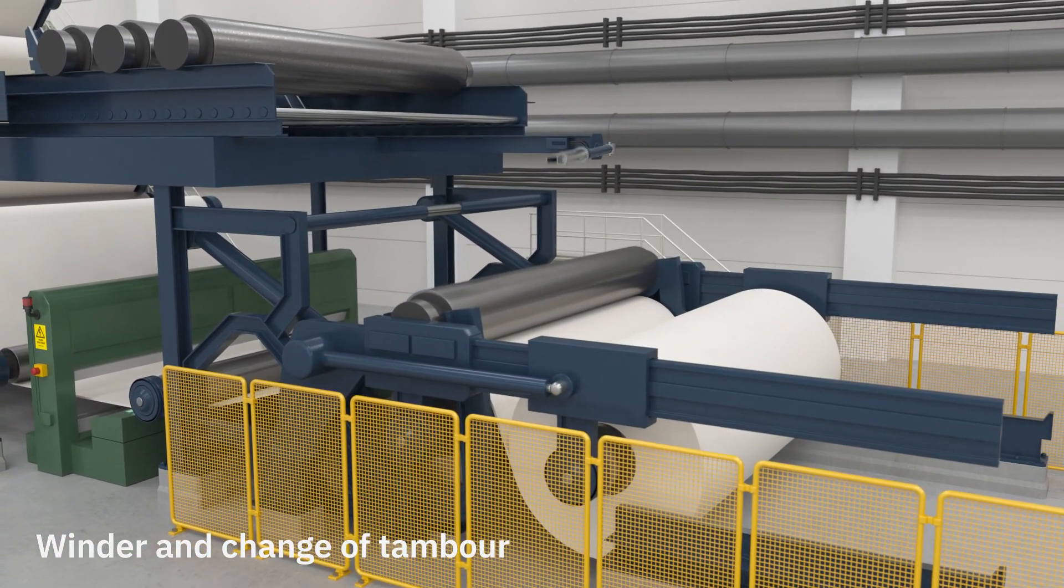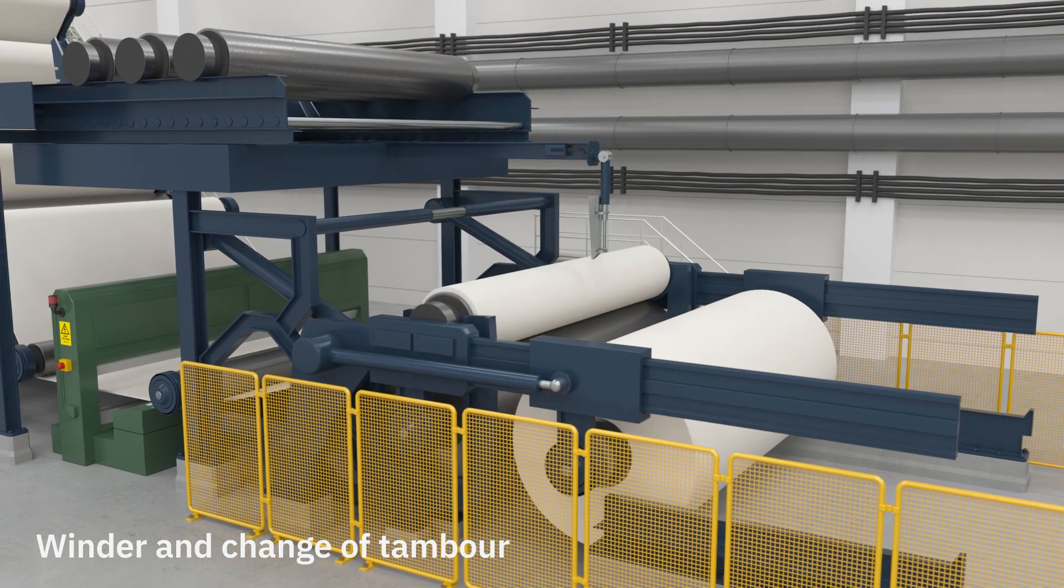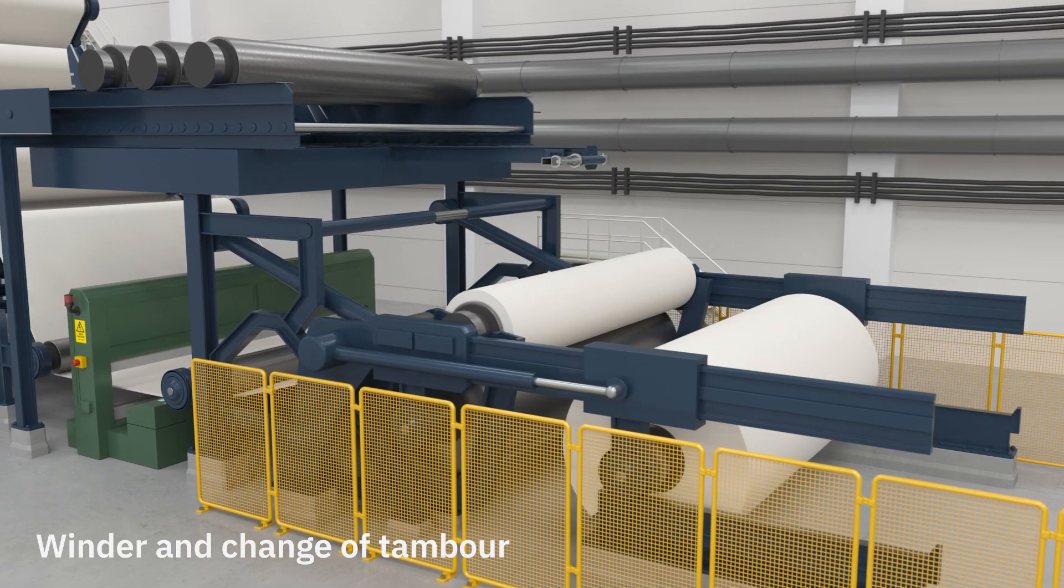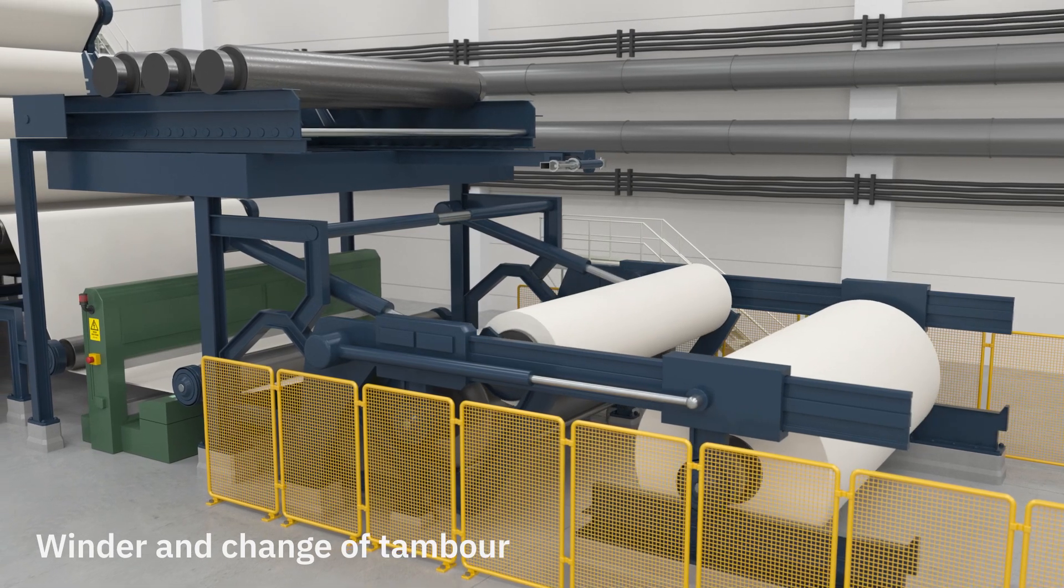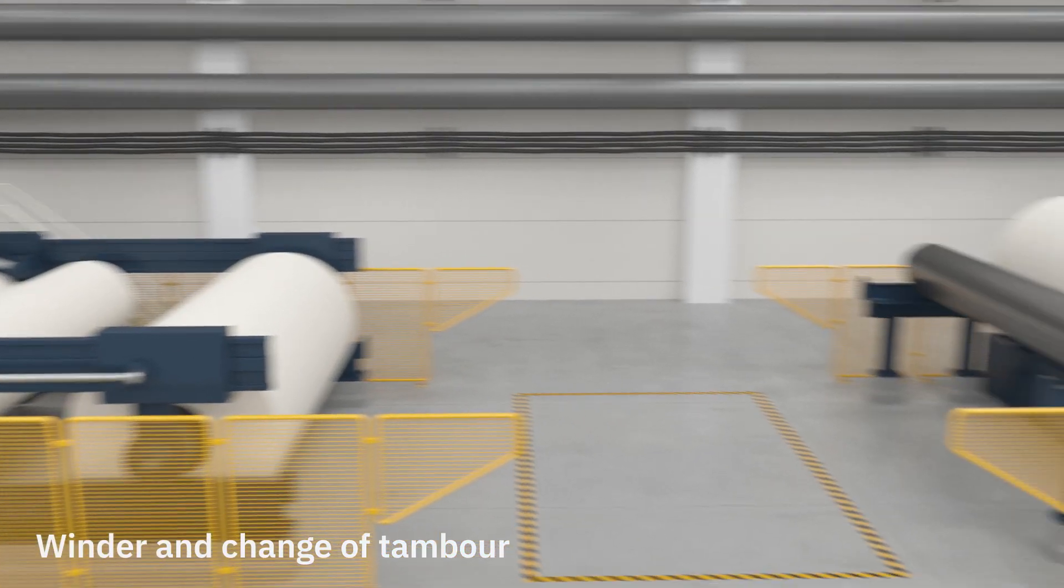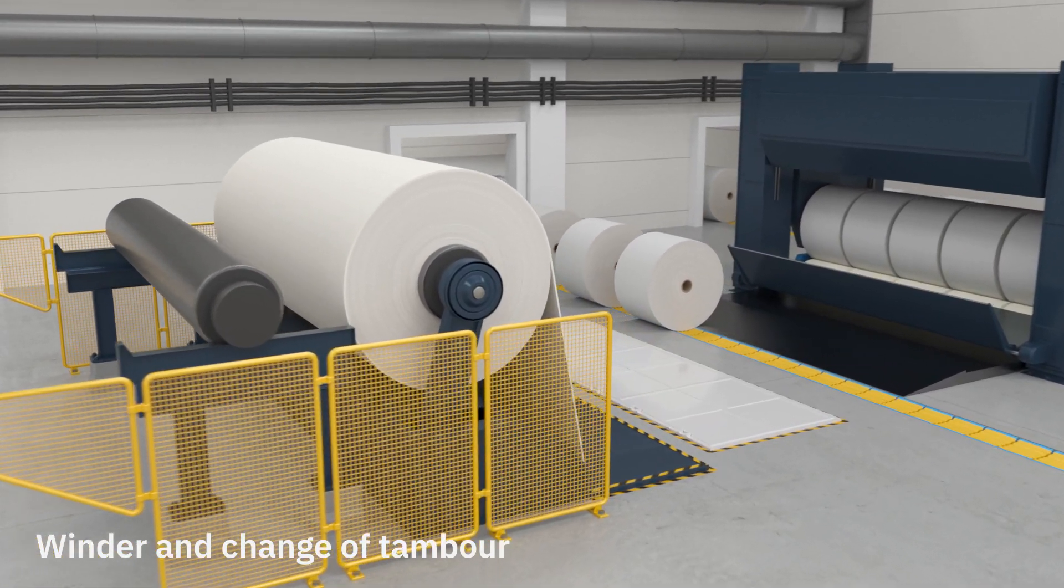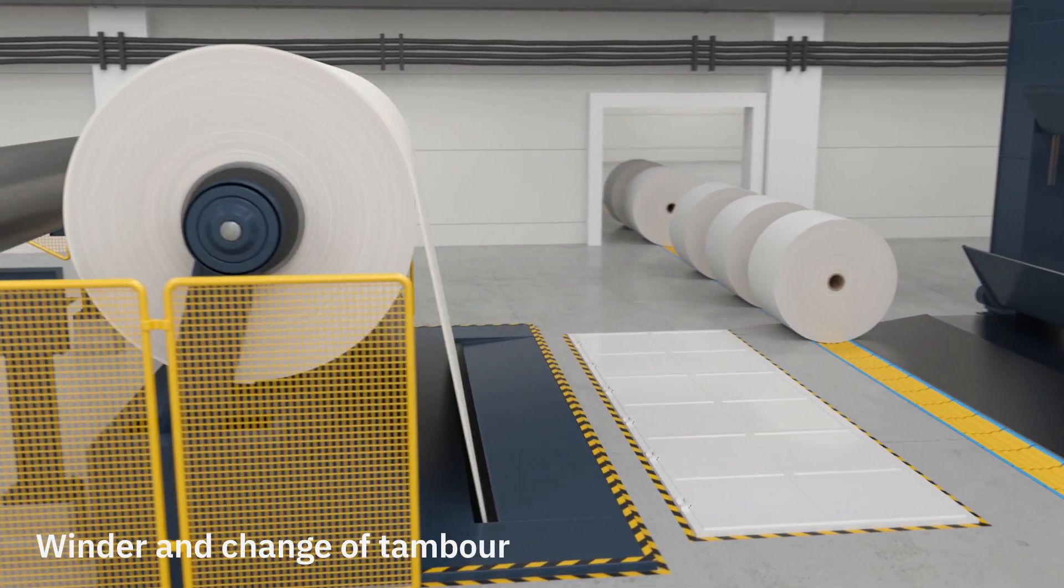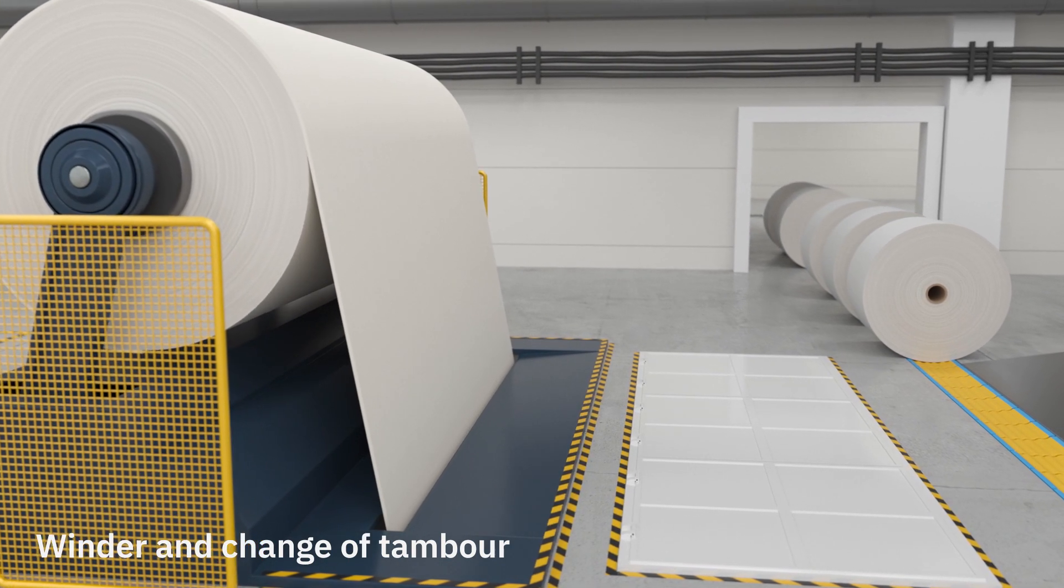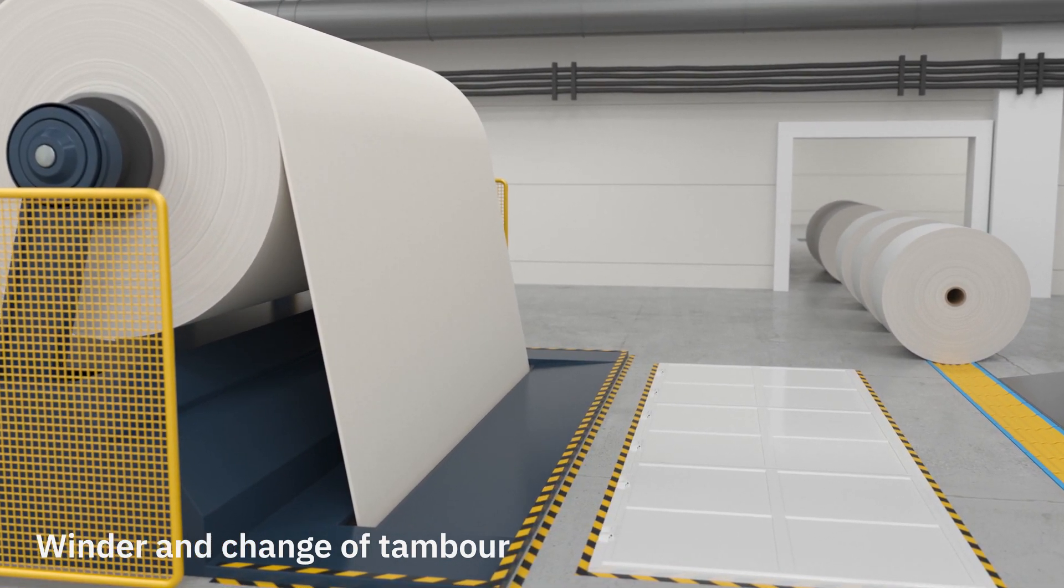The paper is wound onto a jumbo reel, a so-called tambour, where up to 100,000 meters of paper can be wound and weighs about 40 tons. It takes about one hour to produce a full tambour of paper, but it only takes 15 seconds to get the paper through the paper machine from the headbox to the jumbo reel.